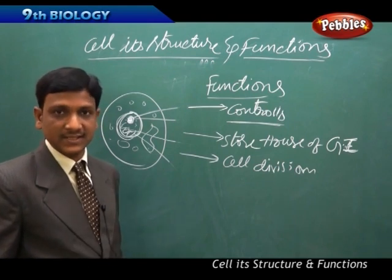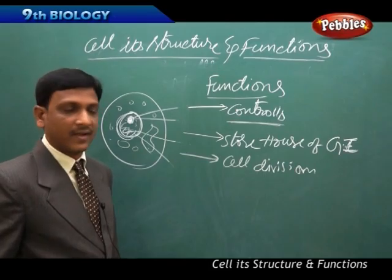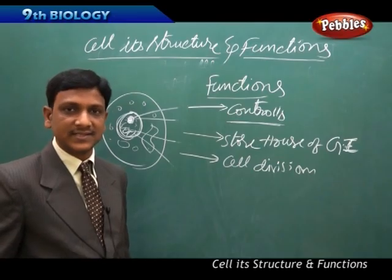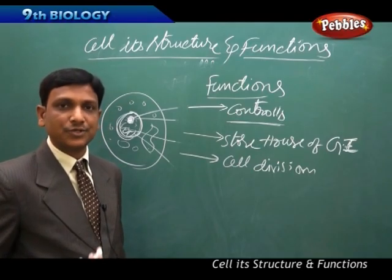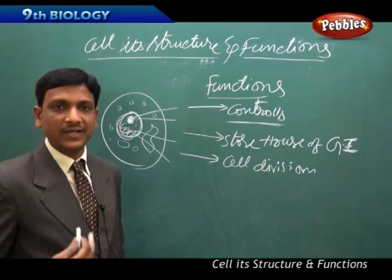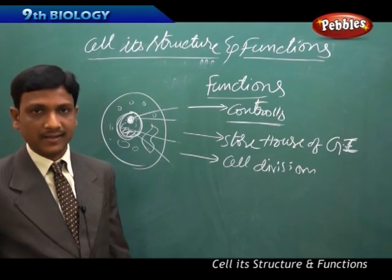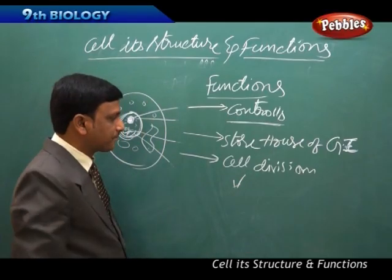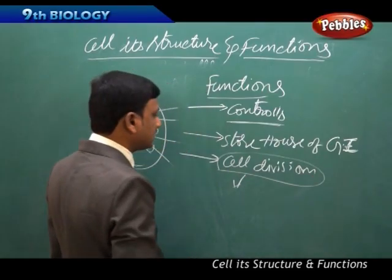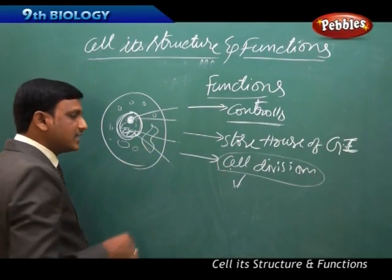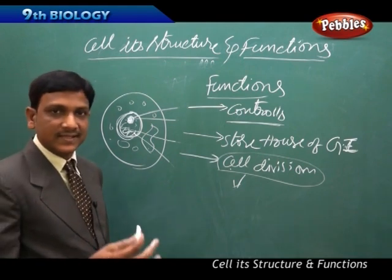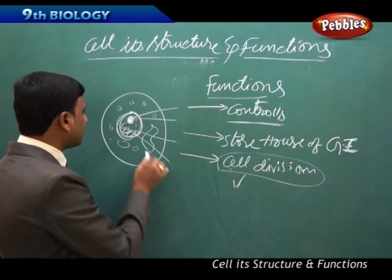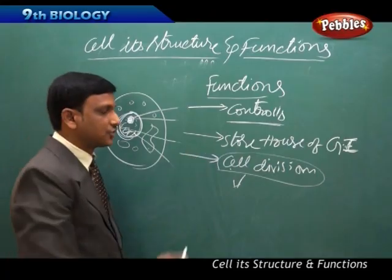New cells come from pre-existing cells. For new cells to be formed, the pre-existing cells have to divide. So cell division — either mitotic or meiotic division — is a very important biological process. The nucleus plays a major role in cell division because the genetic material required for the formation of a new cell is located inside the nucleus.